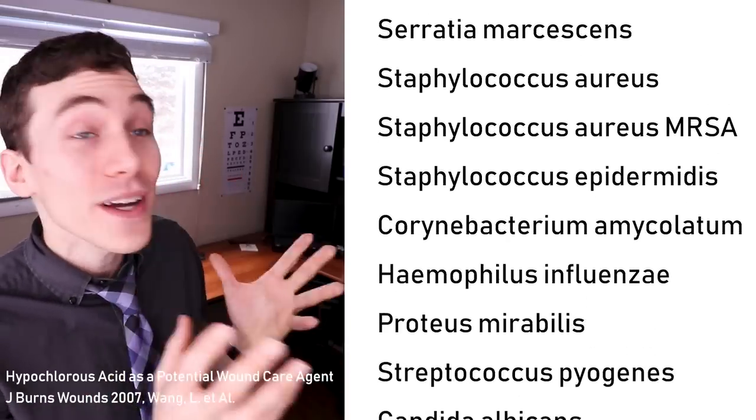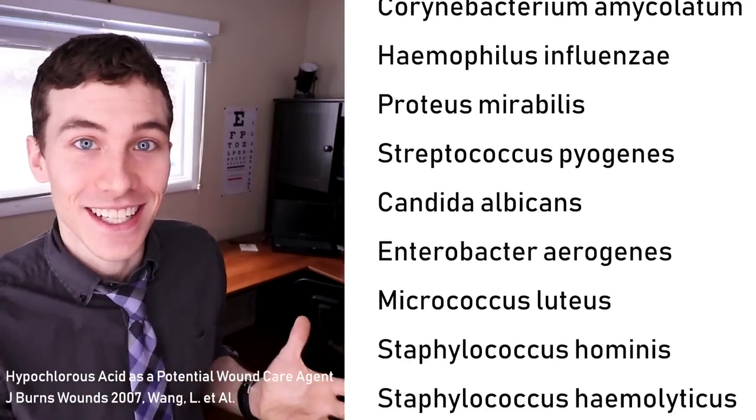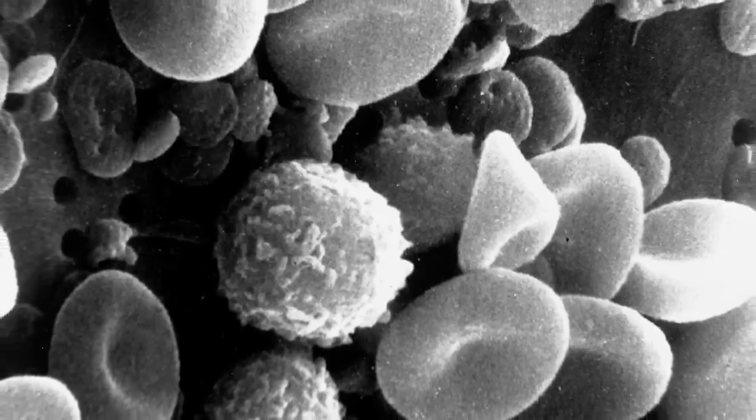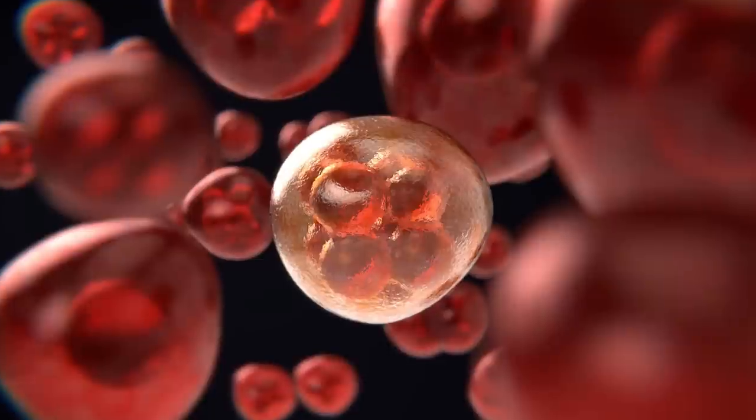So let's go over exactly what is hypochlorous acid. Hypochlorous acid is considered a bactericidal compound which is effective at fighting a very wide range of bacteria — look at how crazy long this list is. And it's natural. The neutrophil white blood cells within your body actually create hypochlorous acid on their own naturally to help fight infection. Now we actually have hypochlorous acid as a safe, non-toxic spray, and it is currently being used across all of healthcare for multiple different ailments.